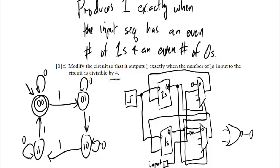In state 3 (11): on a zero we go to 11, on a one we go to 00 — both bits are the negation of the input. So I connect the negated input to both the left and right bits here. For the output, I want it true when both Q values are zero, so I grab the two Q outputs and wire them into the NOR gate. The modified circuit is now complete.